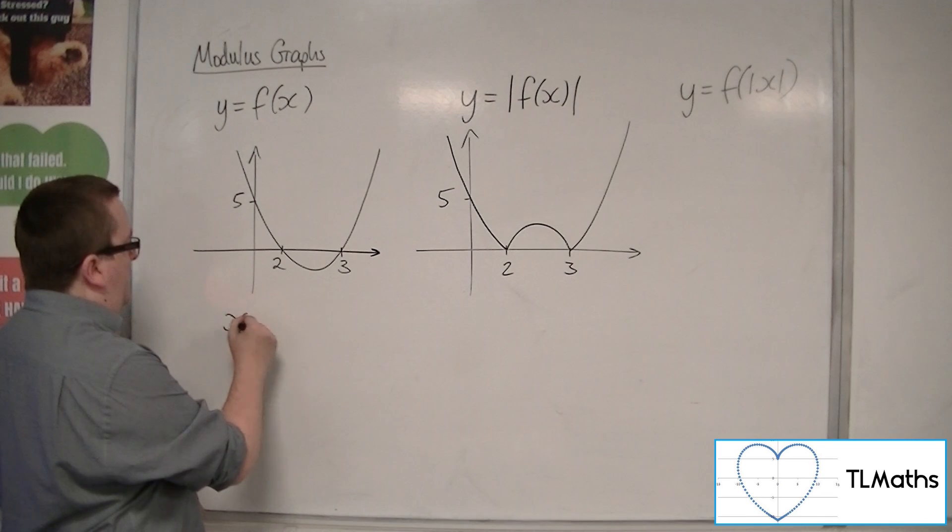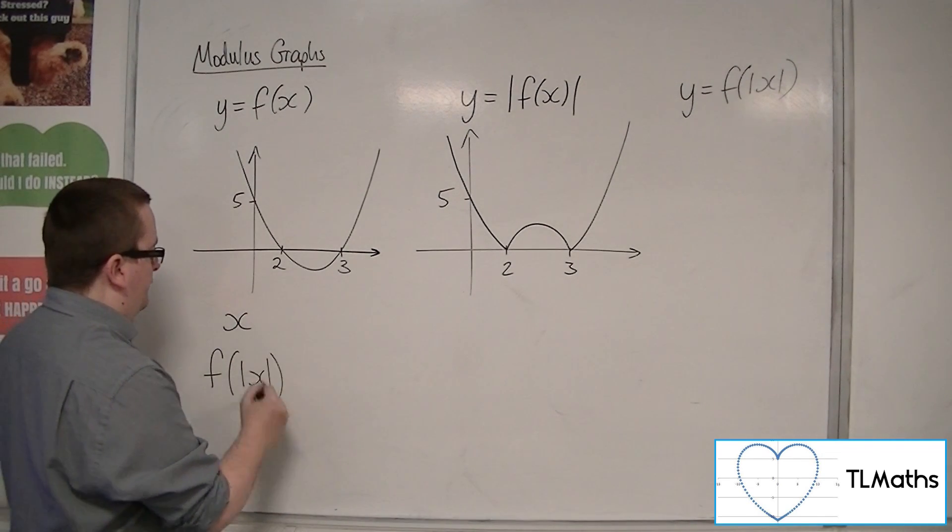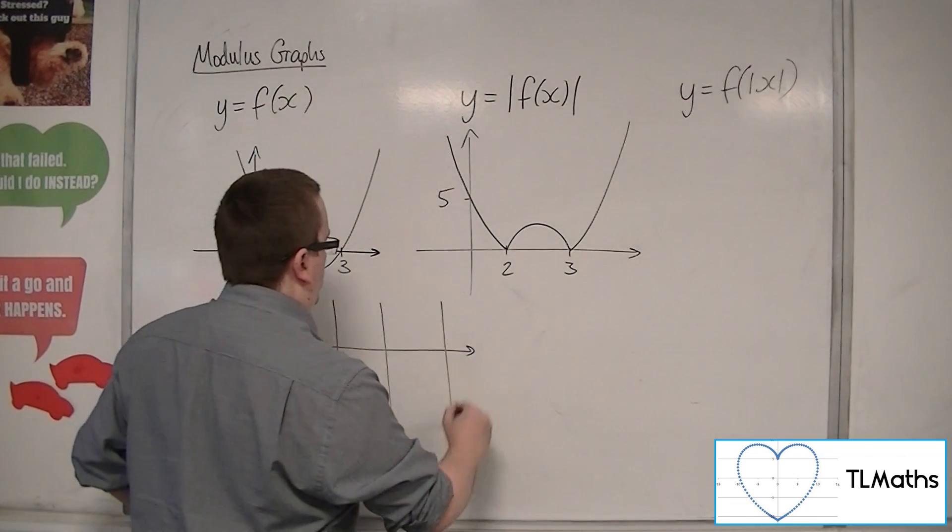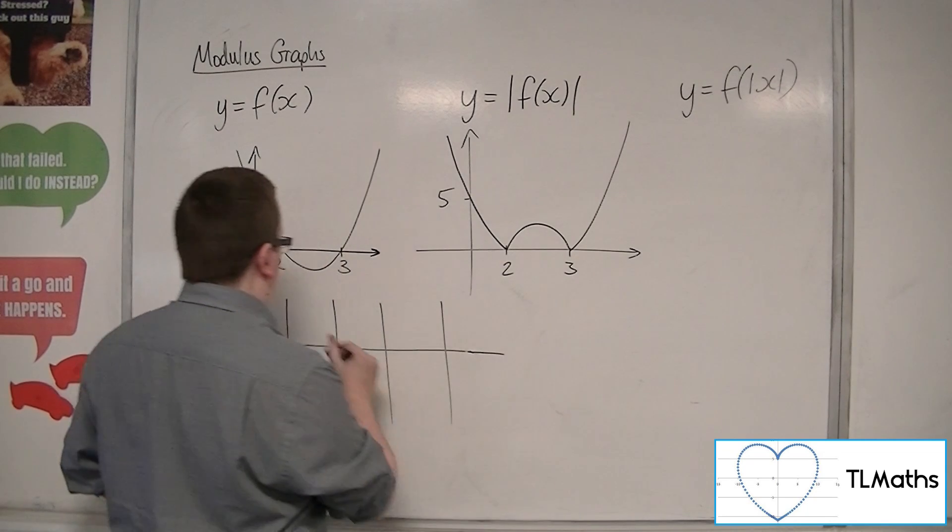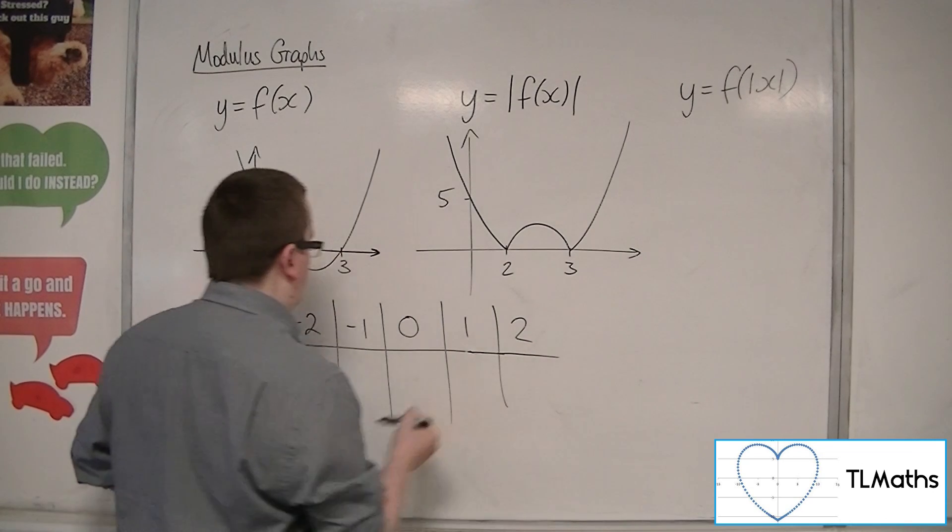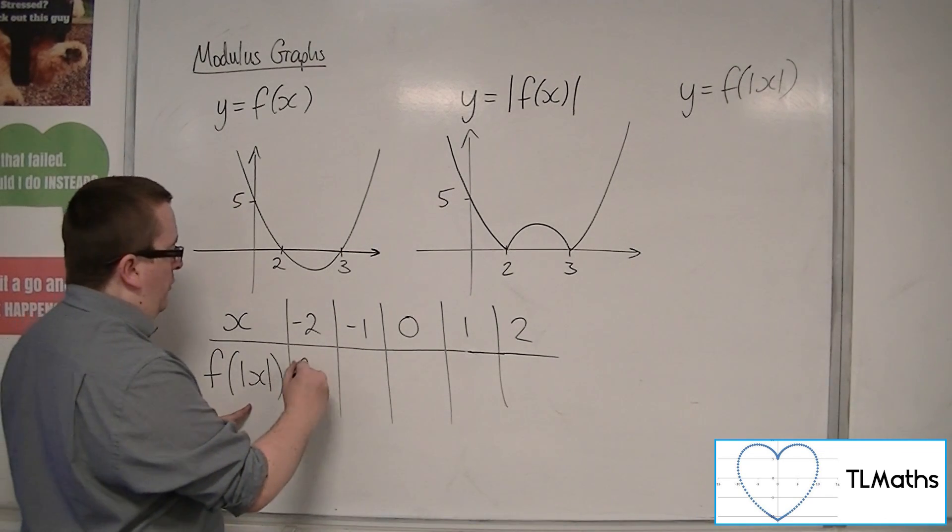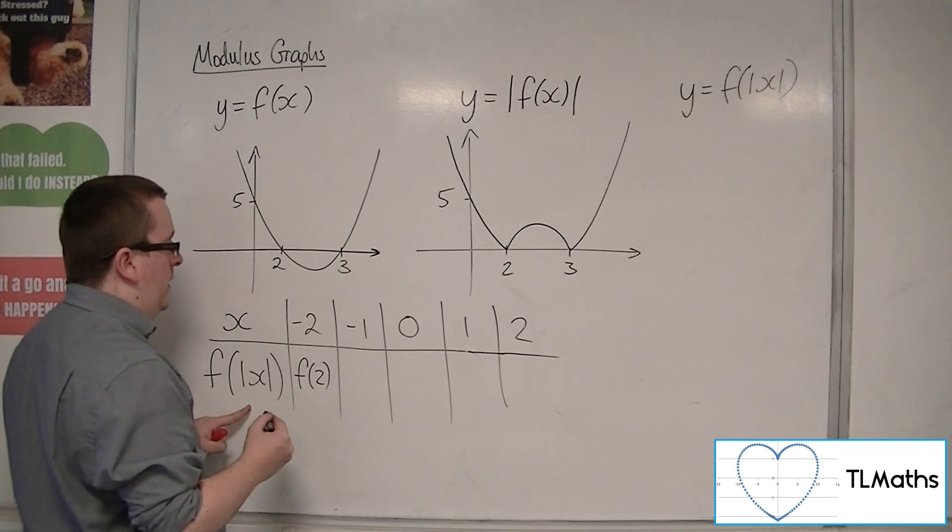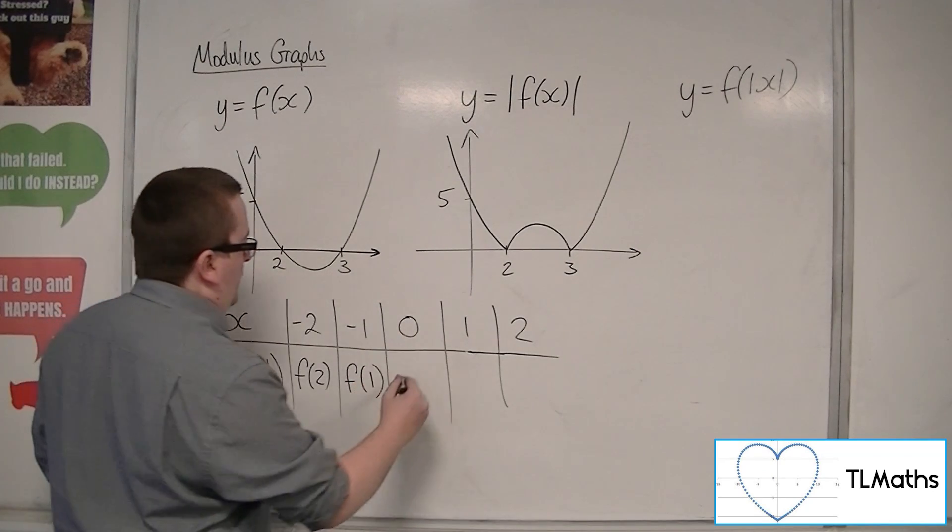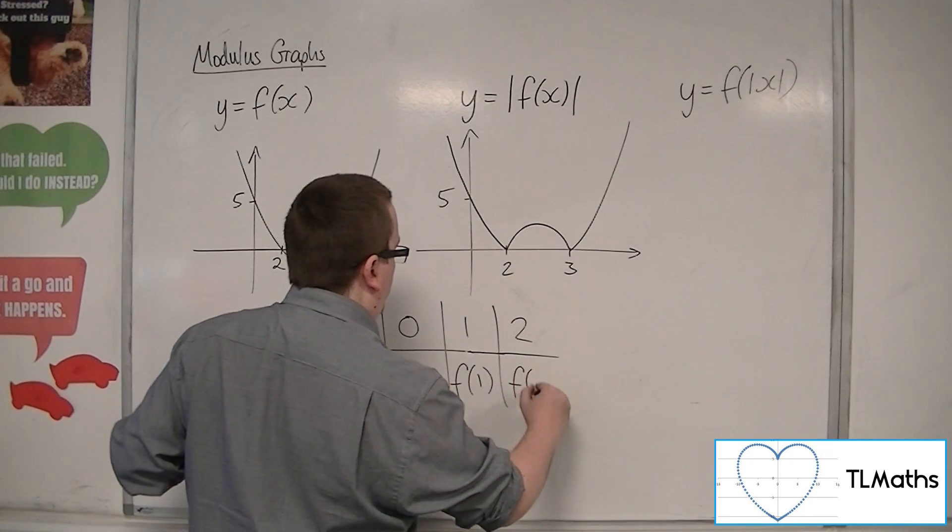What I'm meaning by that is if I set up a table of values, then let's say I chose minus 2, minus 1, 0, 1, and 2. If I put in minus 2, I get f of 2. If I put in minus 1, I get f of 1. Put in 0, I get f of 0, then f of 1, and then f of 2.